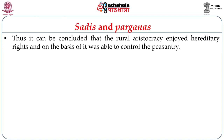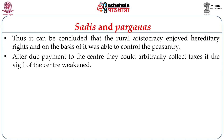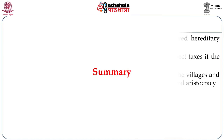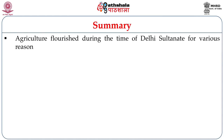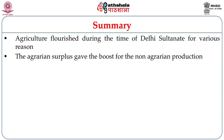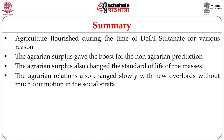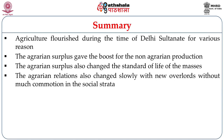In conclusion, the rural aristocracy enjoyed hereditary rights through which it was able to control the peasantry. After due payment to the centre, they could arbitrarily collect tax whenever the vigil of the centre weakened. The centre did not directly control the social life of the villages, and thus the existing caste system always gave an edge to the rural aristocracy. To conclude this module: agriculture flourished during the Delhi Sultanate for various reasons; agrarian surplus gave boost for non-agrarian production and changed the standard of life of the masses; agrarian relations also changed slowly with new overlords without much social commotion; and these changes paved the way for the expansion of the Delhi Sultanate and ultimately for the Mughal Empire in the next century. Thank you.